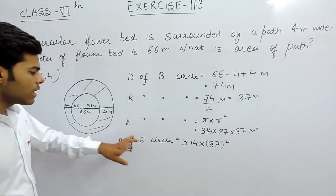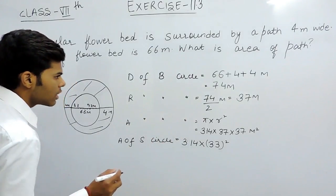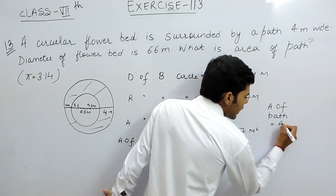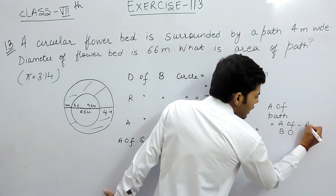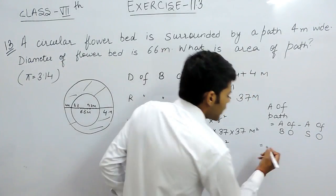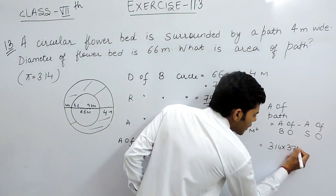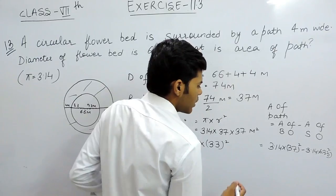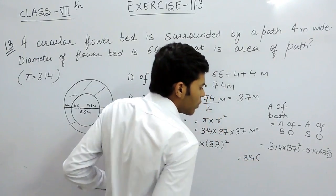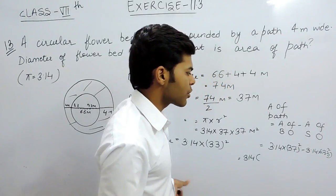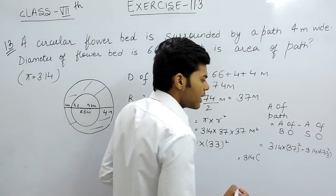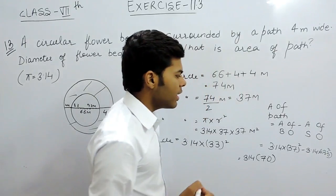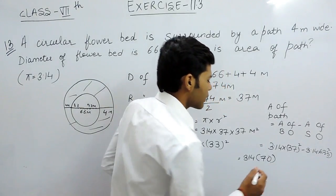The area of this path equals the area of the bigger circle minus the area of the smaller circle. That will be 3.14 multiplied by 37 squared minus 3.14 multiplied by 33 squared. Taking 3.14 as common, we subtract 37 squared minus 33 squared. Using the identity a squared minus b squared equals (a+b)(a−b), so 37 plus 33 gives 70, and 37 minus 33 gives 4.